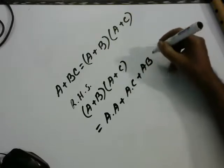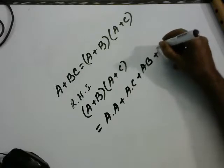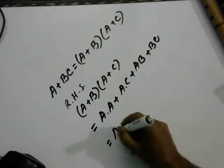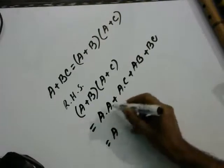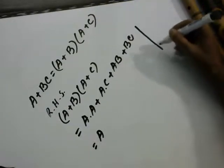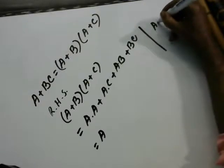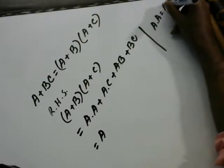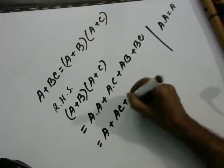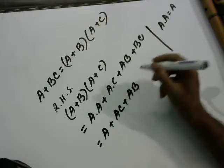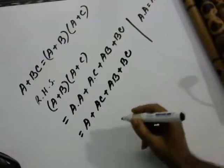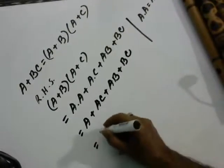A into B plus B into C equal A plus A into A equal A. We know that in logic A into A equal A plus AC plus AB plus BC equal A into